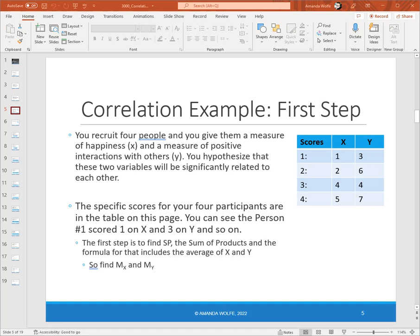You'll see that on the slide are our scores for our four participants. Participant number one scored a one on X, which is happiness, and three on positive interactions with others. You can see the scores for participant number two, participant number three, and participant number four. So from this, the first step would then be to calculate the average for X and the average for Y, because we need both of those to come up with the sum of products. I'm going to pause and you come up with the average for X and the average for the scores on Y. You can also pause this video while you do that.